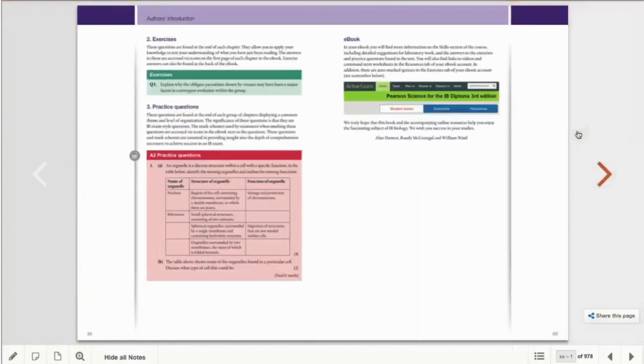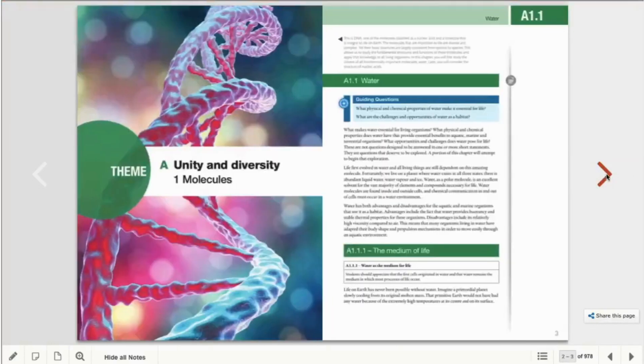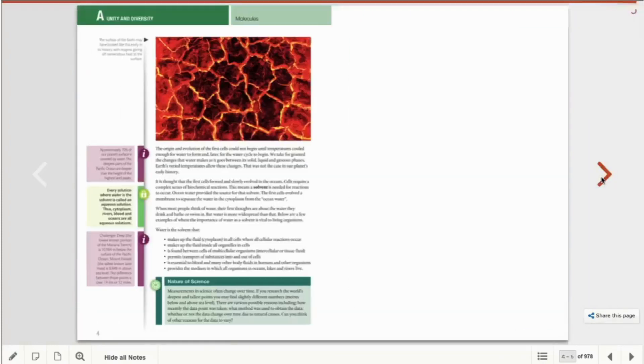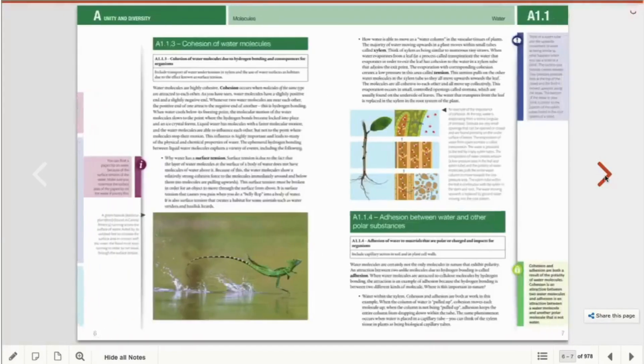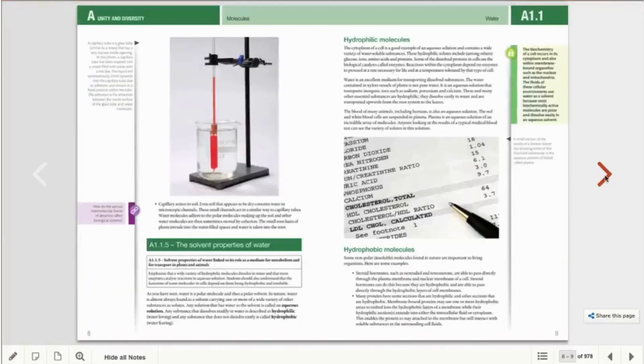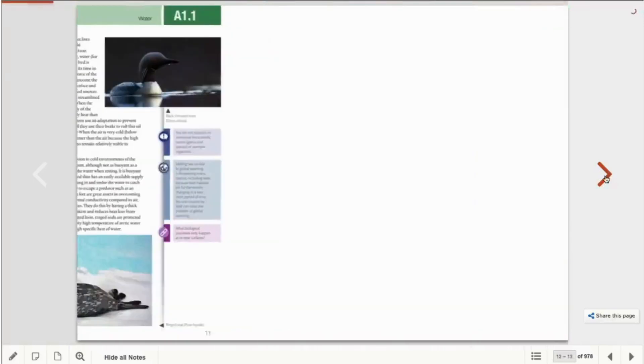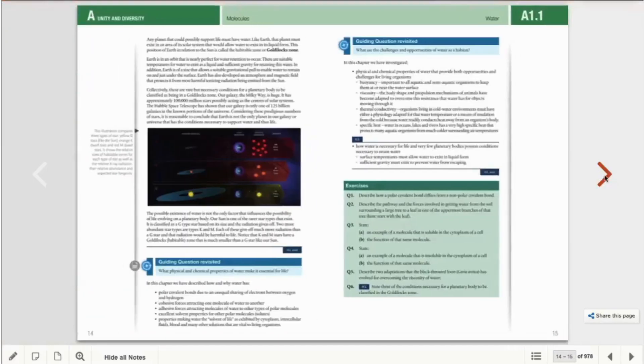Let's see how the first chapter looks like. You see the practice questions and exercises. The first chapter starts with the guiding questions, and for each part it gives the syllabus outline. Here you have the key facts, information, and nature of science.